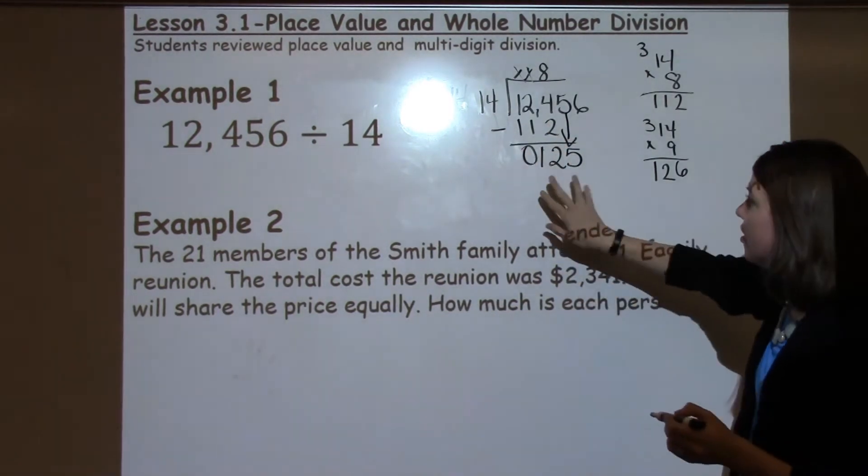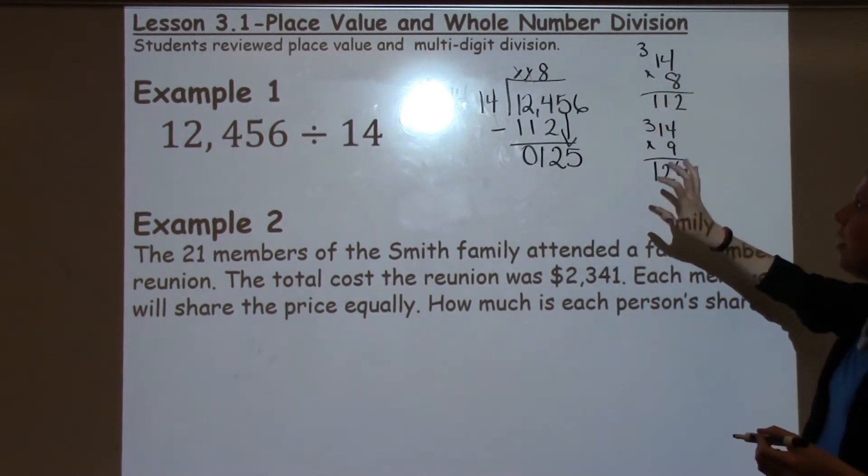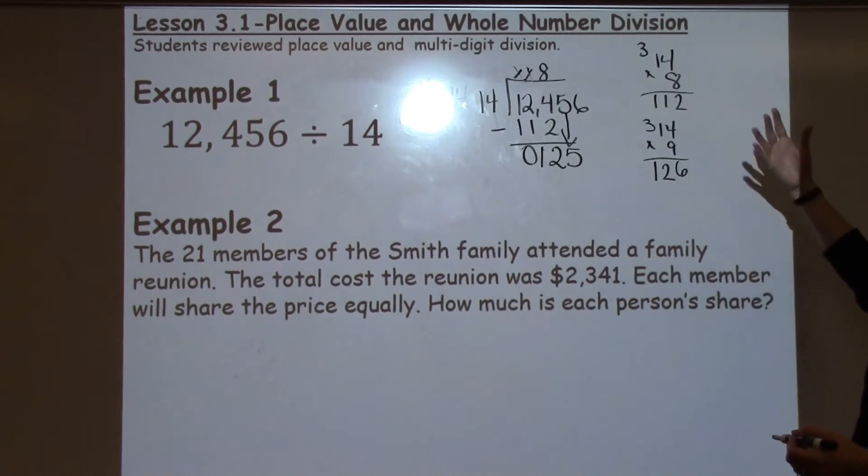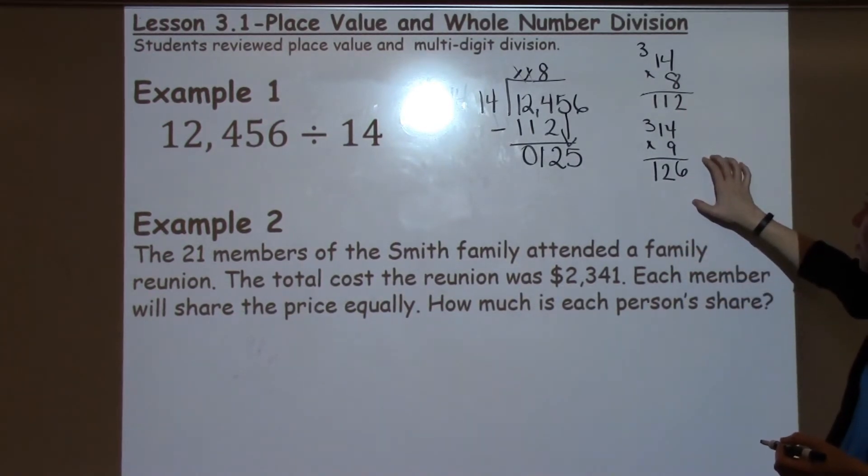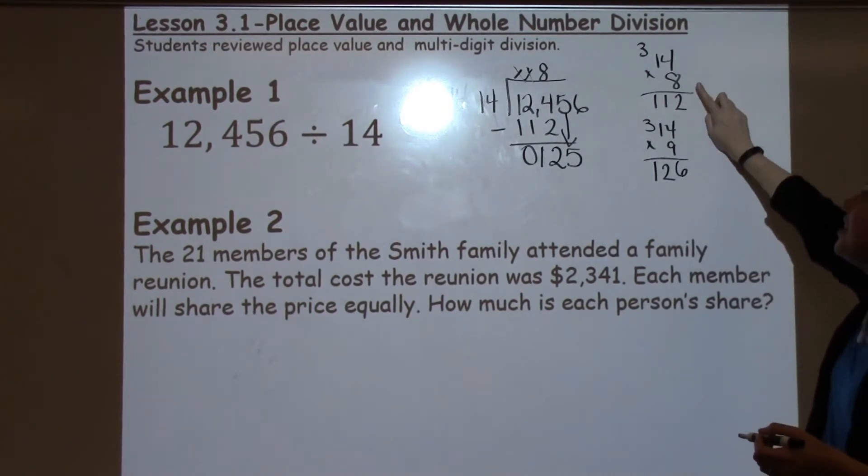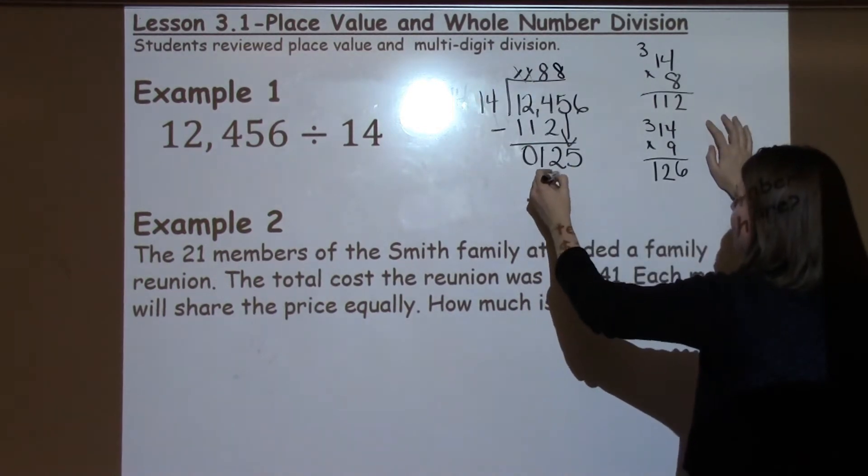So I need to think, can 14 go into 125? This is where it becomes really important for 6th graders to keep their work on their paper, so I need to go back and reference it and not take 14 times 8 again or take 14 times 9 again if they've already done the work. Well, I can see 14 times 9 is just a little bit over, so I need to use 8 again.